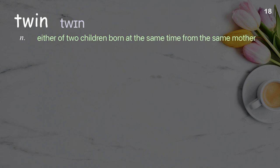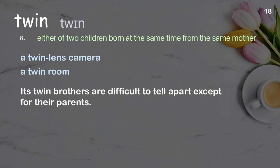Twin: either of two children born at the same time from the same mother. Examples: a twin-lens camera, a twin-room. Its twin brothers are difficult to tell apart except for their parents.